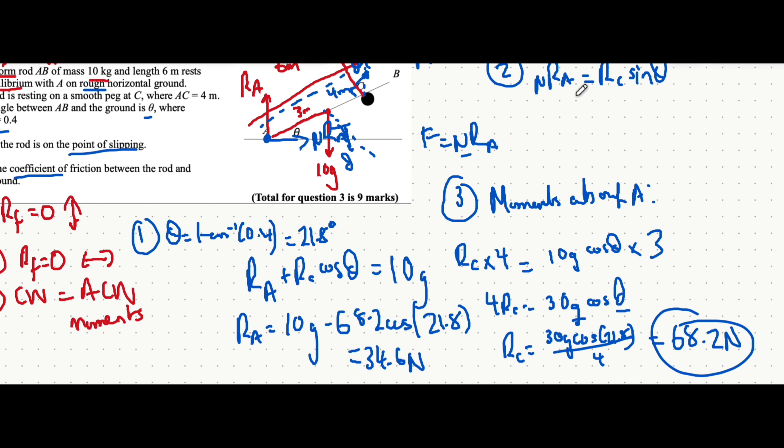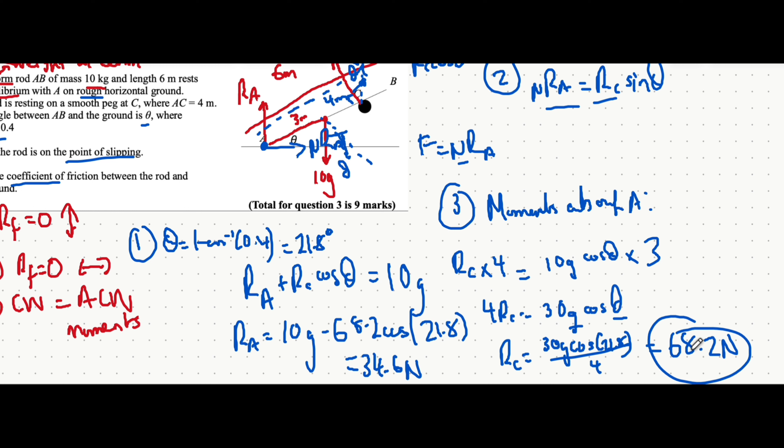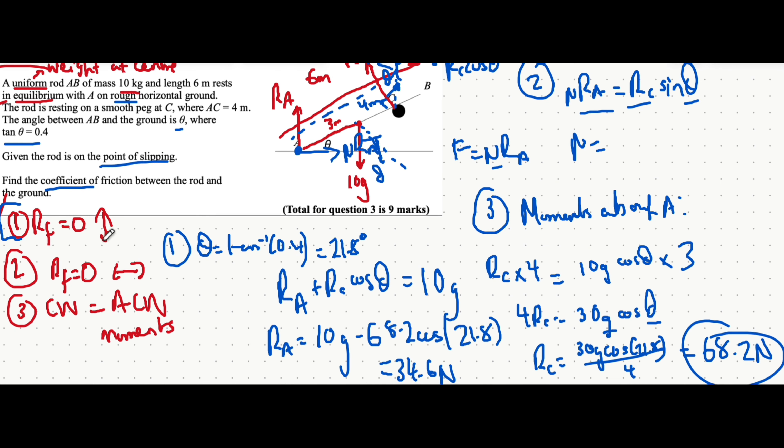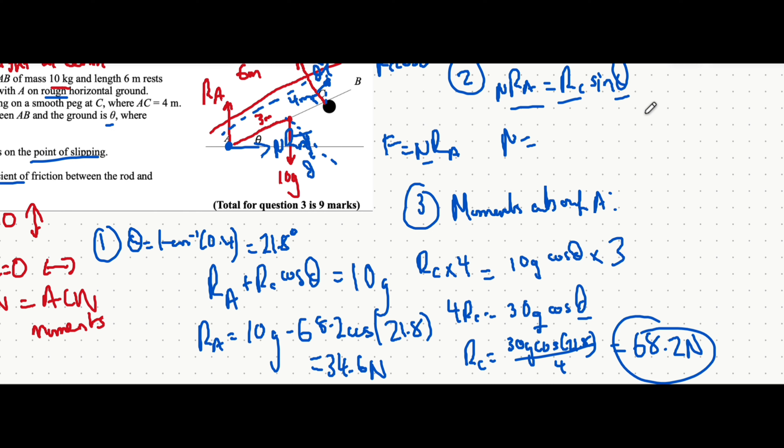Now that we have the reaction force at A is 34.6 and we have the reaction force at C is 68.2, we can point to this equation and we can rearrange for the coefficient of friction. That's what I mean when I say that once you find all three or use all three facts of what you know about objects in equilibrium, then you can find the answer.